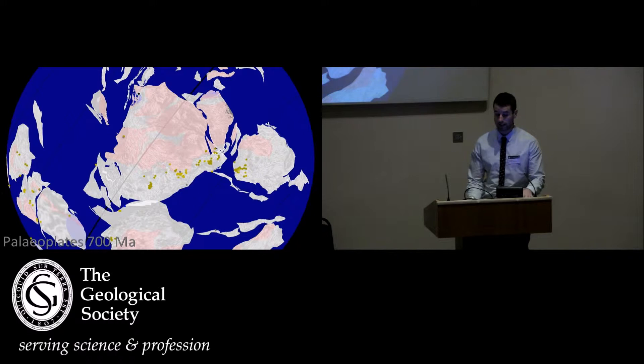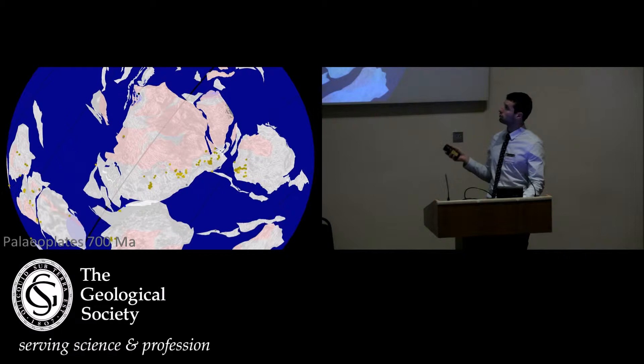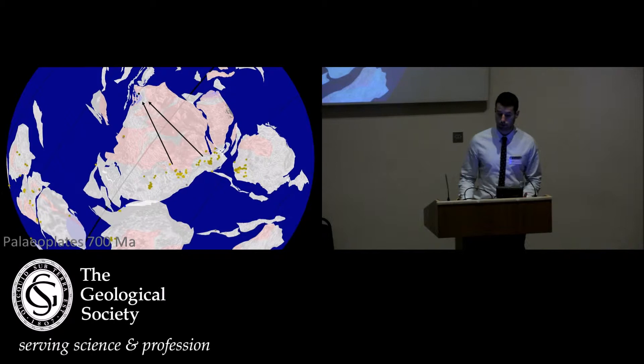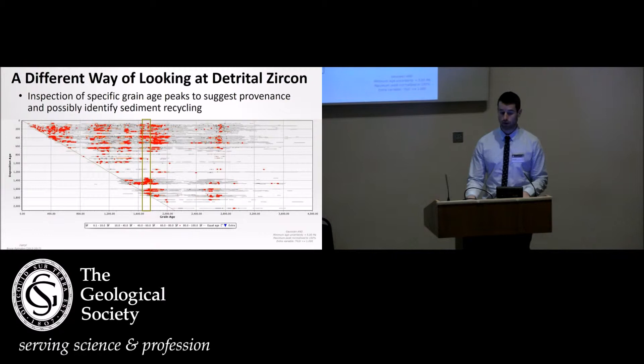And then finally, at 700 million years, very similar patterns where we have sources and then the deposition of the sample. It seems plausible that Robert Rainbird's proposition of a Neoproterozoic drainage system on Laurentia is accurate, looking at the data that I have.